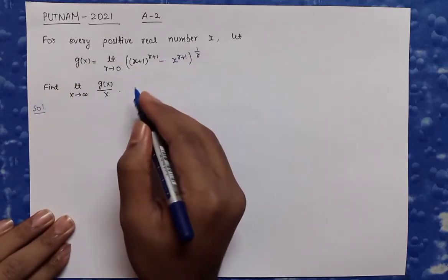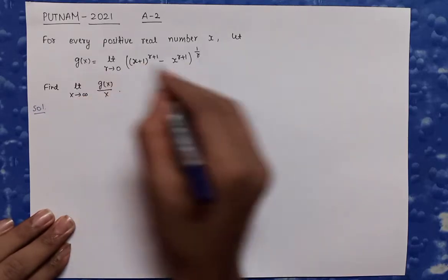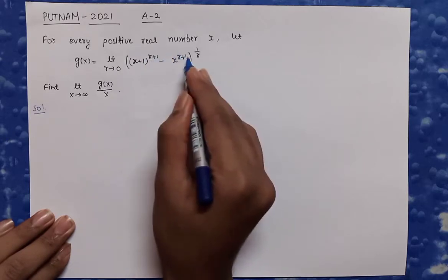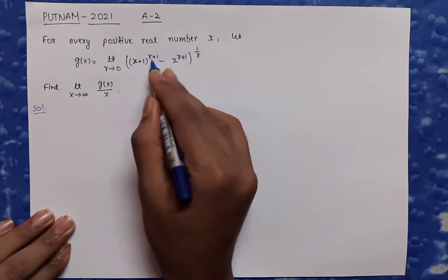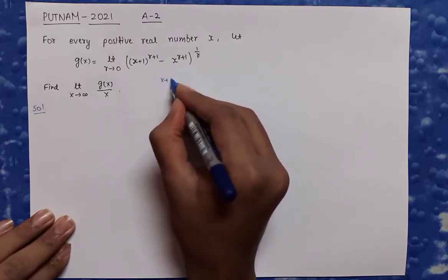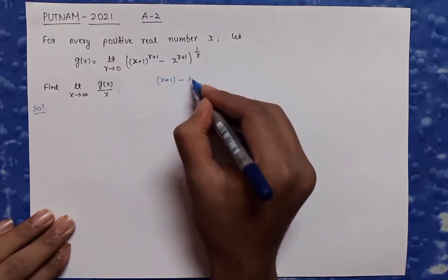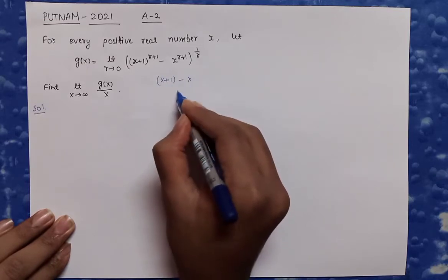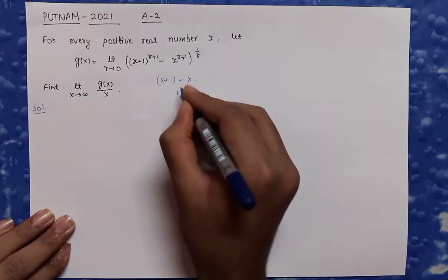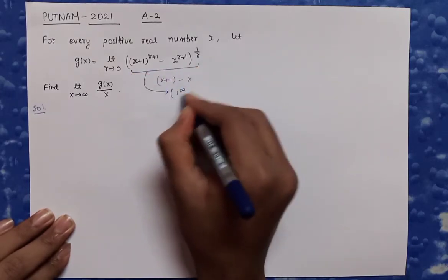First, we are going to find what type of limit g(x) is. If I substitute r = 0 in the base, I get (x+1)^(0+1) - x^(0+1), which gives (x+1) - x = 1. So the base tends to 1, and the exponent 1/r tends to infinity. Therefore, this limit is going to form the 1^∞ (one raised to power infinity) form.